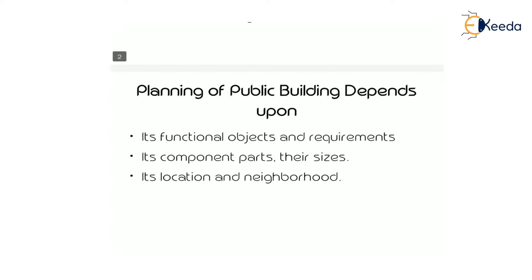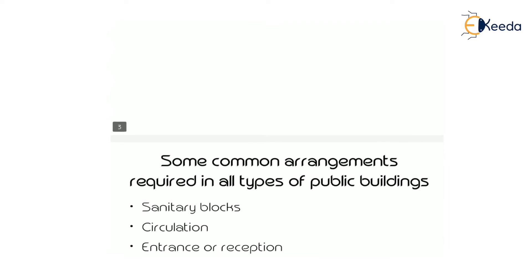The planning of a public building depends upon the following factors: first, its functional objects and requirements; second, its component parts and their sizes; and third, its location and neighborhood, meaning site selection. The component parts may change according to the type of building, their sizes, and functional objectives.